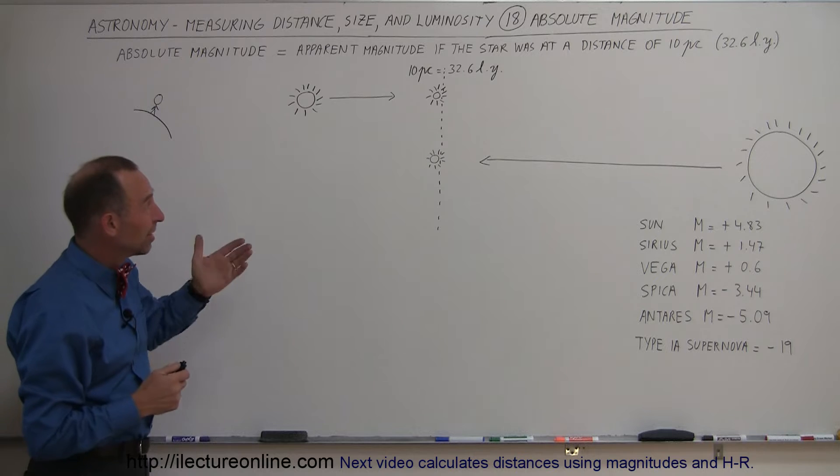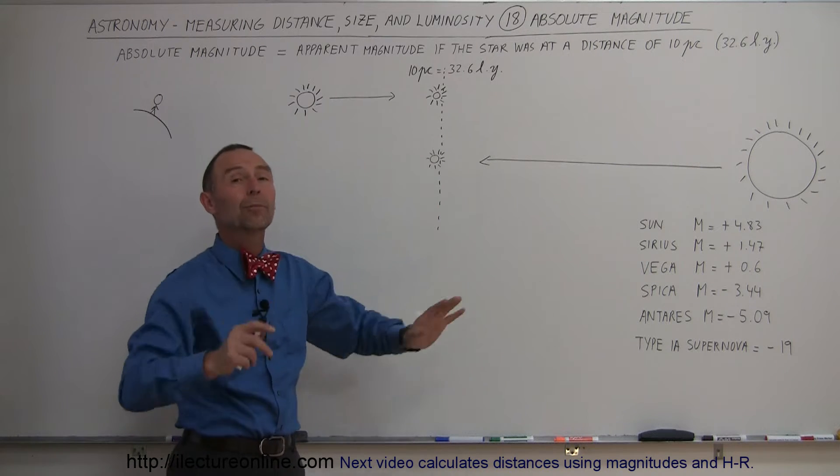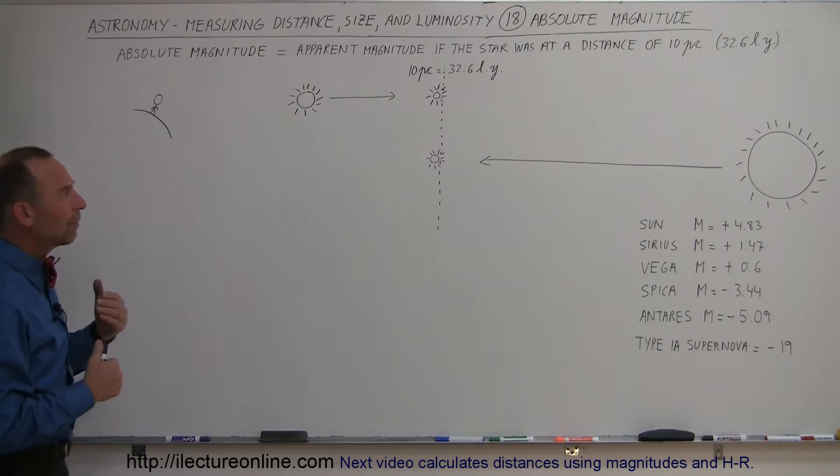So stars like the sun can only be seen to maybe a distance of maybe 11, 12 or so parsecs away, and at that point, you probably wouldn't be able to see them anymore. Now, to give also another picture, another view of this, let's say that we have a relatively bright star in the sky.